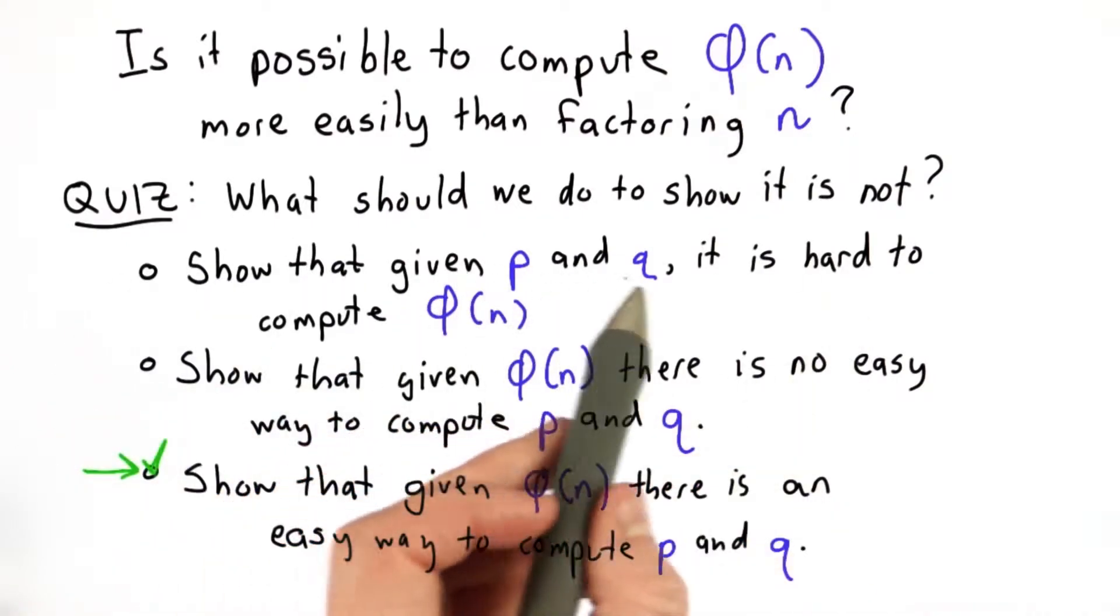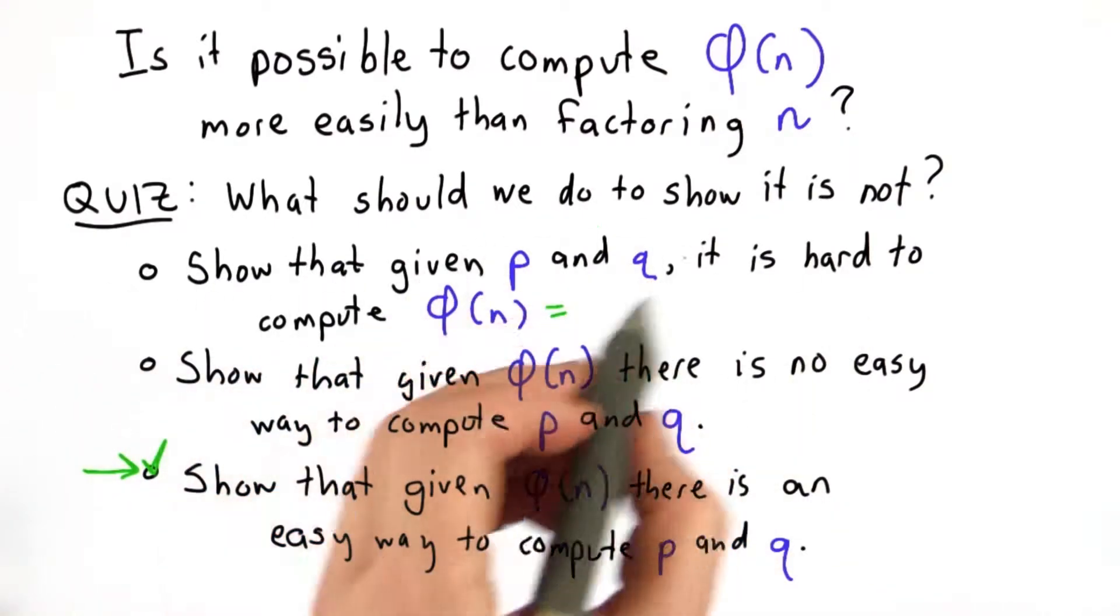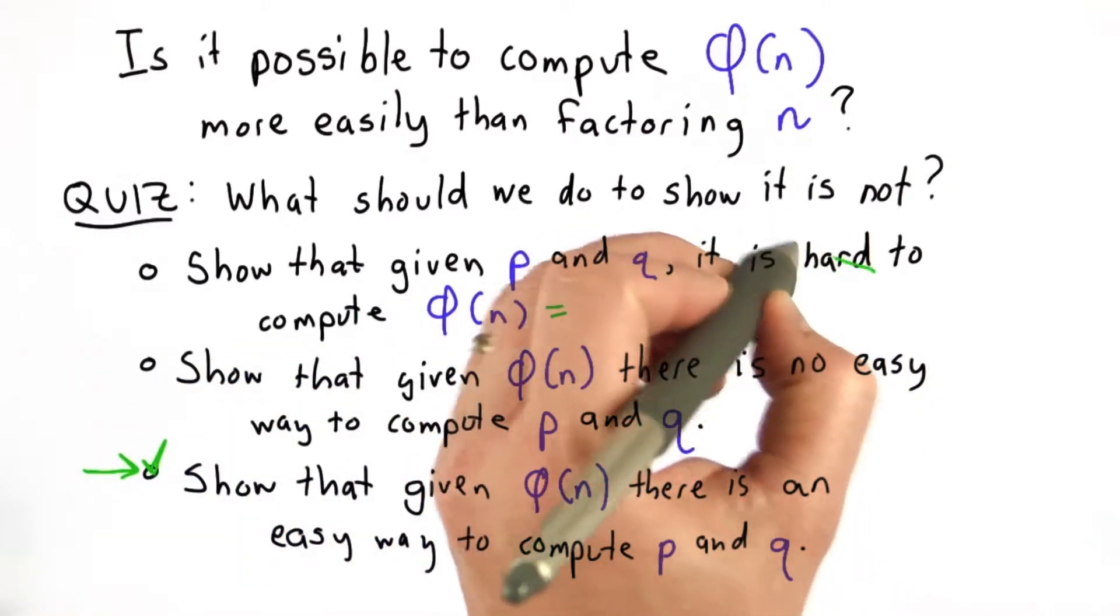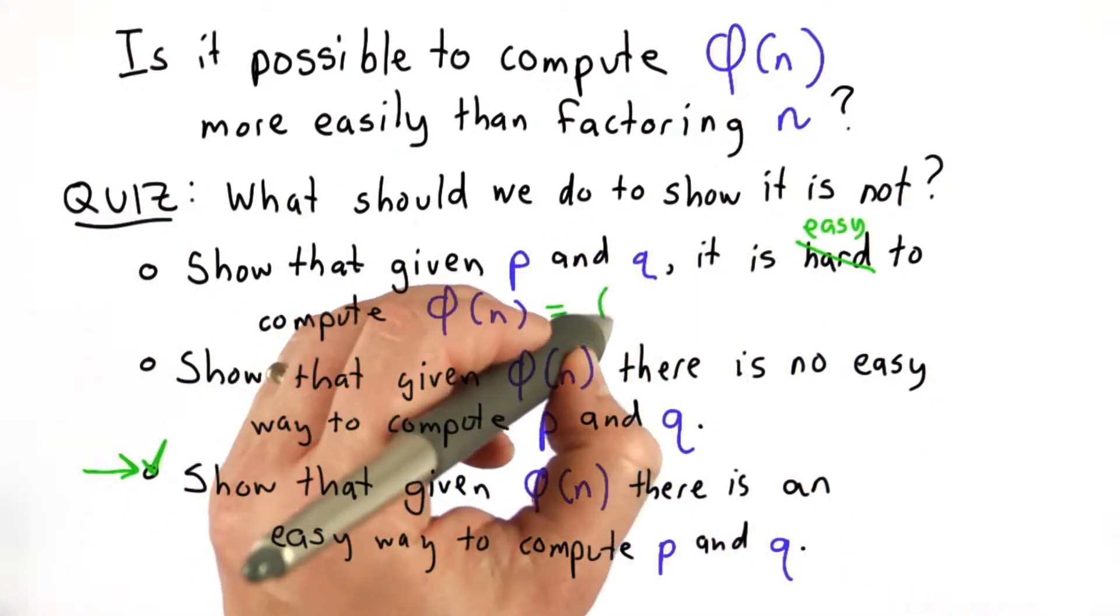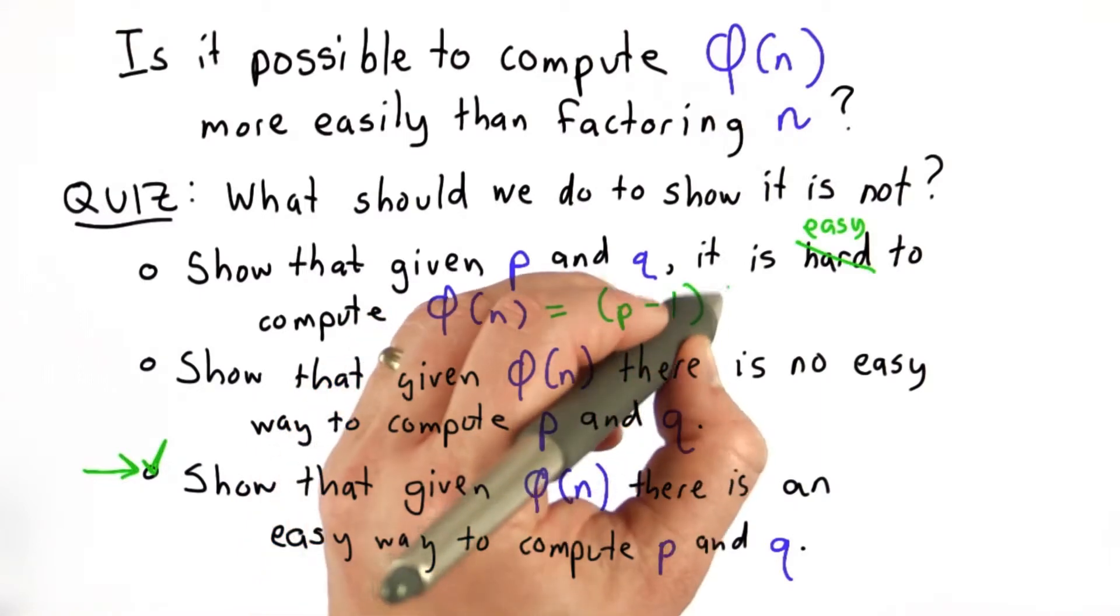Of the other choices, the first one is actually not true. If we have p and q, it's actually easy to compute the totient of n, and it's easy because we know the totient of n is p minus 1 times q minus 1.